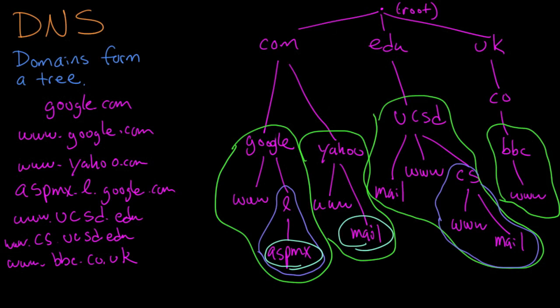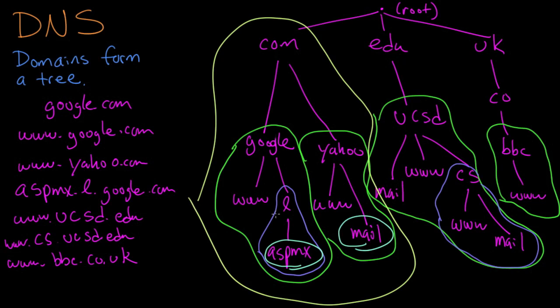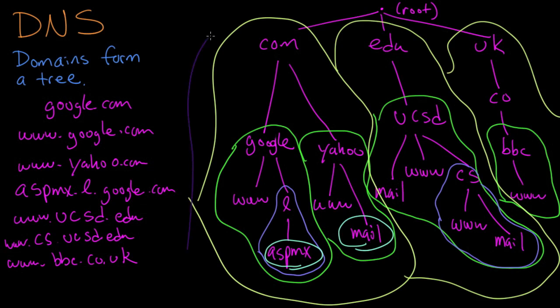There's some really big domains here, like here's all of com. That's a huge domain, and there's millions, probably even billions of things in there. Here's all of edu. And here's all of UK. And then there's the really big one here, which is basically everything. The entire domain hierarchy itself is one big domain rooted up here at the top.